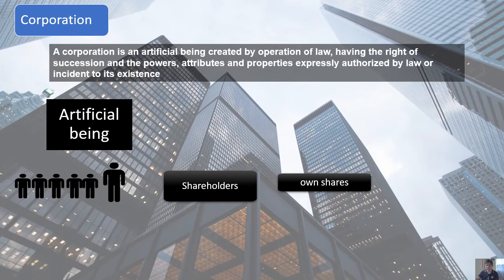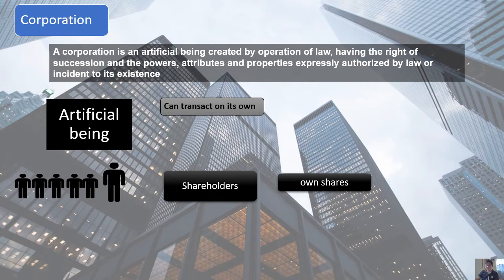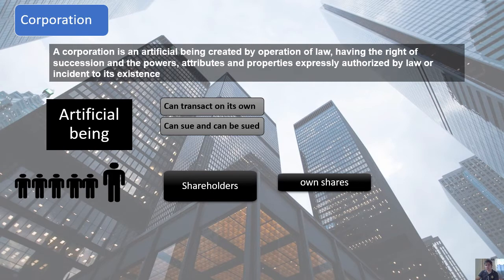As a corporation — which is an artificial being — one of its benefits is that it can transact on its own. Meaning it can sell and purchase products without using the name of the shareholder. Having the rights of an artificial being as a person in the eyes of law, the corporation can also sue and be sued — meaning the corporation can file against another person, whether natural or artificial, and likewise, natural or artificial persons can file against the corporation itself.